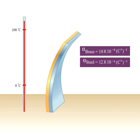What will happen if the temperature is decreased instead of increased? In this case, the larger value for alpha will give a larger thermal contraction. In other words, both metals will contract, but the brass will contract more than the steel. Let us turn down the temperature and watch what happens.